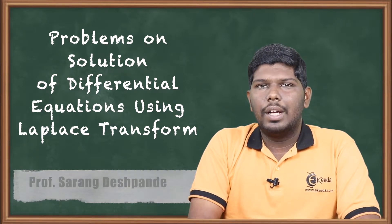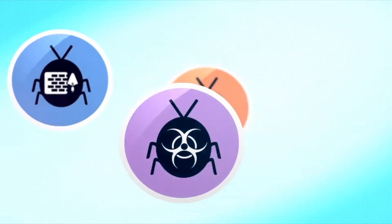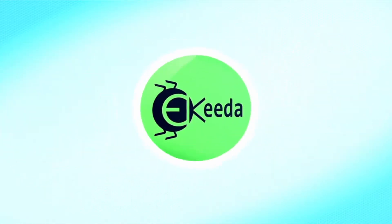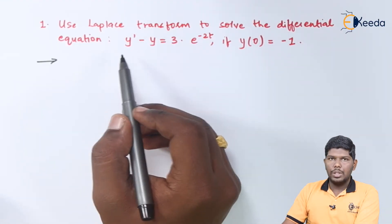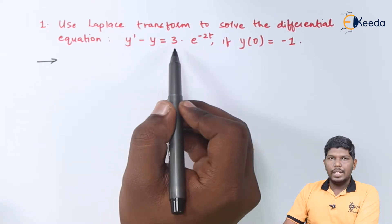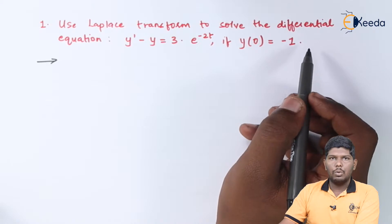Let us start with problem number 1. Use Laplace transform to solve the differential equation y dash minus y is equal to 3 into e raised to minus 2t, if y of 0 is equal to minus 1.